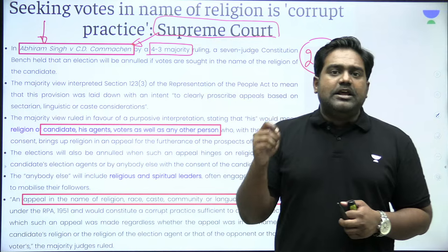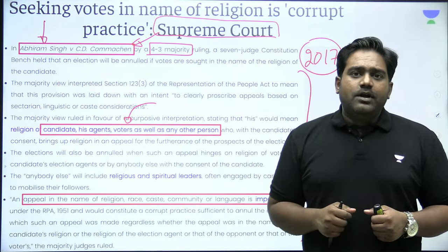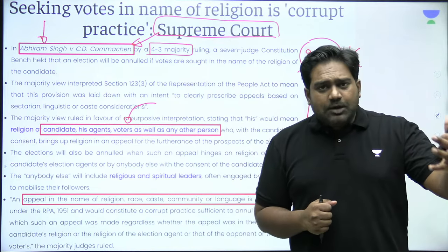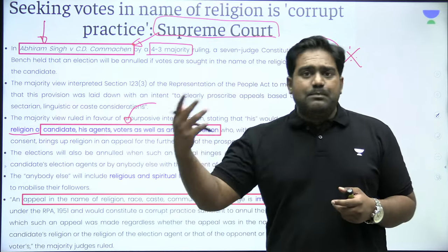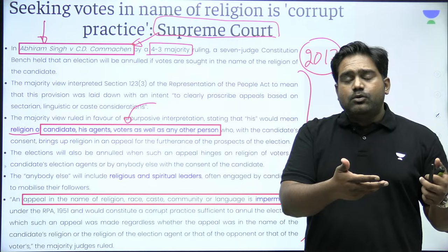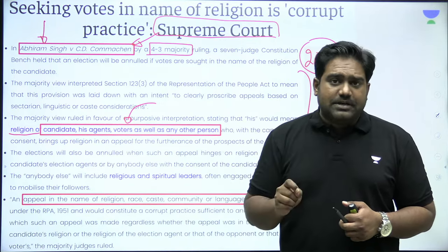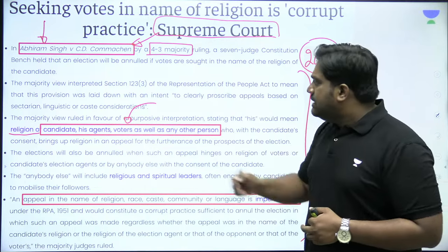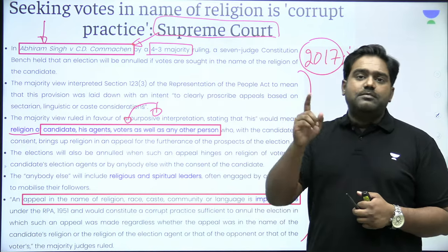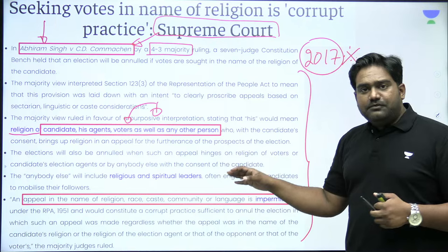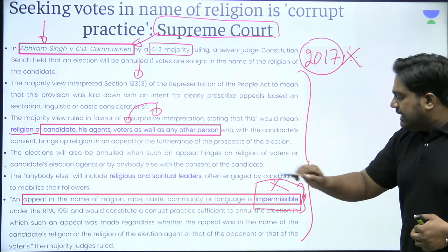The majority judgment clearly pointed out that if any candidate, party agent, other political leaders campaigning on behalf of a candidate, religious leaders or gurus, or even celebrity campaigners — whoever is seeking votes on the lines of religion, caste, or promoting hatred and divisions — then this act will be treated as a corrupt electoral practice and such candidates can be debarred from contesting elections. The Supreme Court upheld the validity of this law and clearly pointed out that such practices are impermissible in a secular democracy.